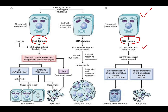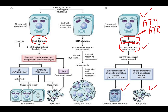DNA damage is sensed by proteins known as ATM and ATR. These proteins sense the damage and activate P53. Once activated, P53 can put the cell into quiescence or senescence, or trigger apoptosis of the damaged cell.